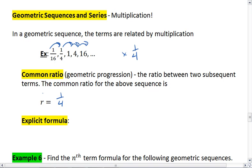And that common ratio is the ratio between two subsequent terms. I then do have an explicit formula for a geometric sequence.